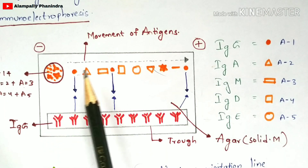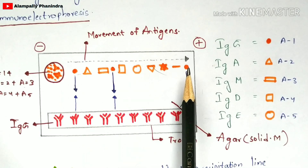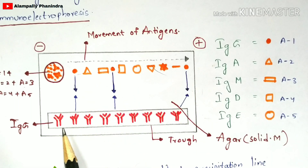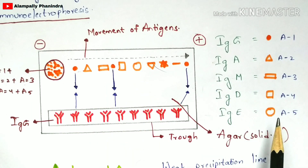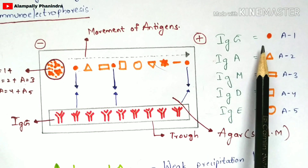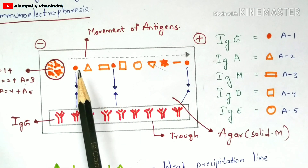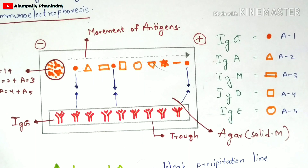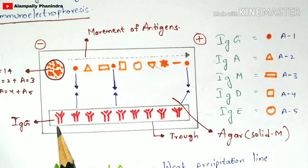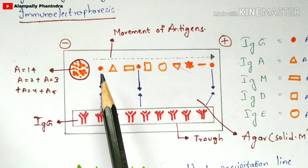Since only IgG antibodies are present in the trough, and IgG can bind only with the a1 antigen, all a1 antigens migrating through the gel will bind to the IgG antibodies. The other antigen types — a2, a3, a4, a5 — cannot bind to IgG. In this way, a specific antigen can be detected by adding the particular antibody that is suitable for that antigen. Once the antigen binds to the antibody, a white precipitation line can be seen.